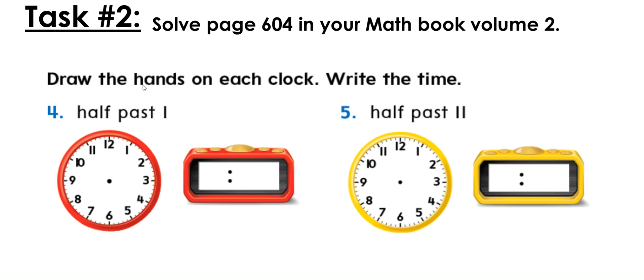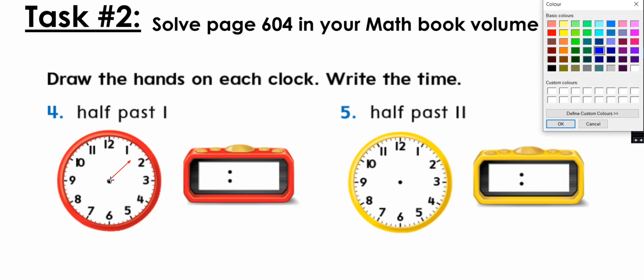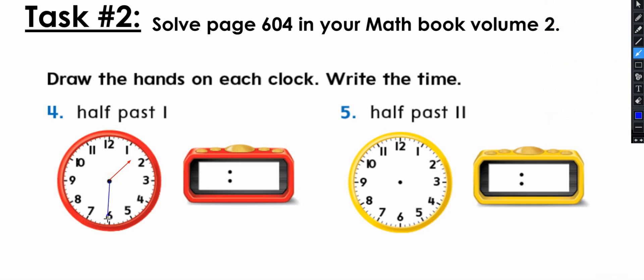Let's start with number four. So we have half past one. Let's draw first the hour hand. Half past one. So we need to make the hour hand where? In one. In one or in between one and two? In between one and two. In between one and two. And it's short hand so it doesn't go all the way here. It has to be a bit short. Okay. And what about the minute hand? Where should it go? It's half past. Does it go on the twelve or on the six? On the six. Yes, because we are showing half past. Now this clock is showing half past one, which means 1:30.